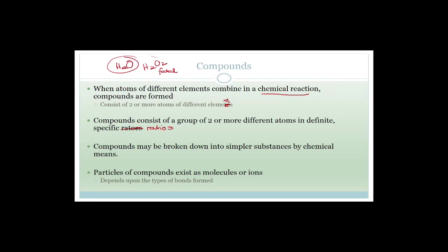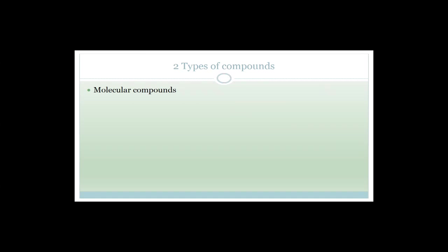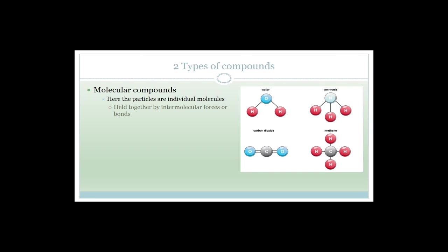Particles of compounds exist as molecules or ions, and that depends on the type of bonds formed. Whether it's a covalent bond or an ionic bond will determine whether the particles the compound breaks up into are molecules or ions. There are two types of compounds. The first are molecular compounds, which have individual molecules. They are held together by intermolecular forces or bonds, and examples are water, ammonia, carbon dioxide, and methane.